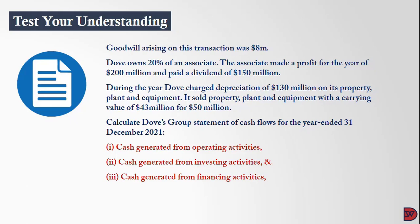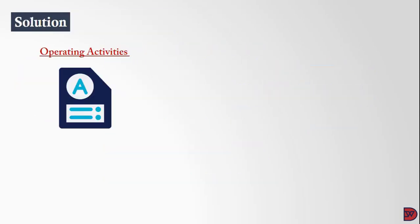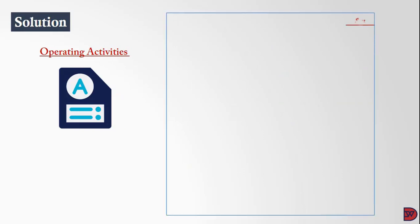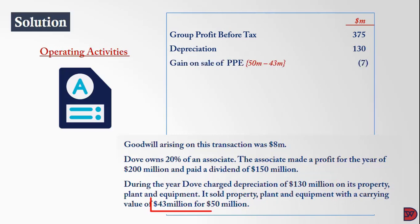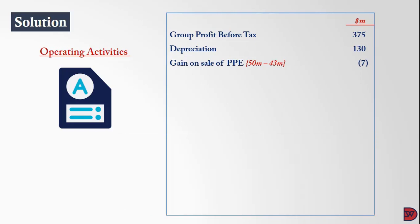For the solution, we start with operating activities, beginning with group profit before tax. Depreciation of 130 million dollars was subtracted in arriving at profit, so we add it back. The gain on sale of property, plant and equipment is also adjusted, as stated in the additional information. There is also an impairment on goodwill of 54 million — we'll get to the workings very soon.